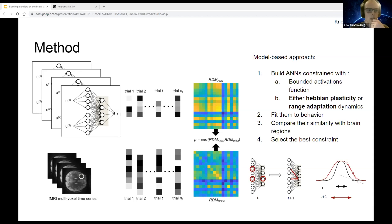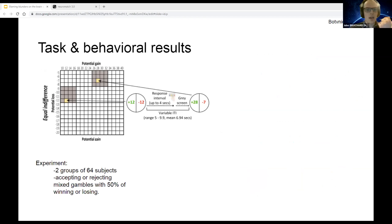I'm applying this approach to the experimental data of Botvinik-Nezer 2019, which is a very simple task where participants are asked to either accept or reject mixed gambles where there are 50 percent chance of winning a given amount and 50 percent chance of losing this amount.